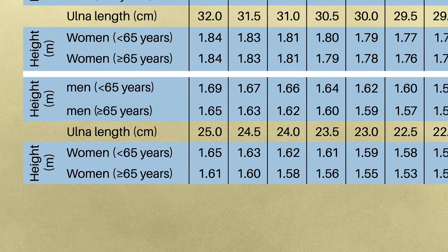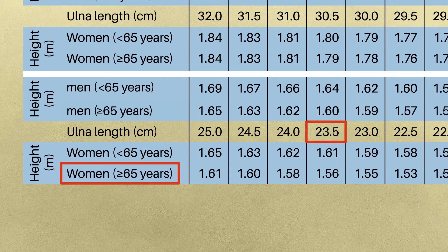For example, if the ulna length of a 70-year-old woman is 23.5 centimetres, the estimated height would be 1.56 metres. If you cannot for any reason obtain your patient's height through using ulna length, an alternative measurement could be using mid-upper arm circumference measurement.